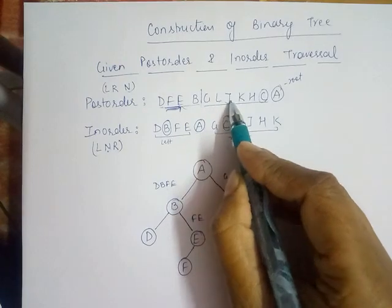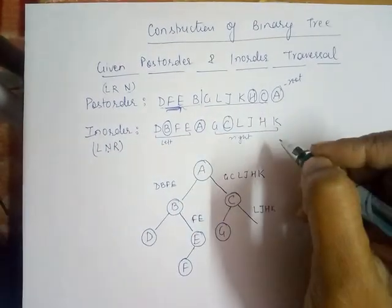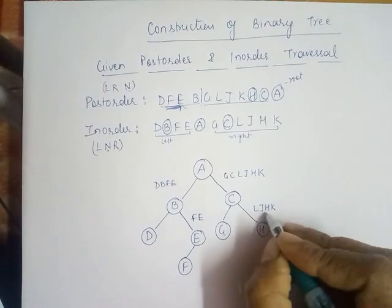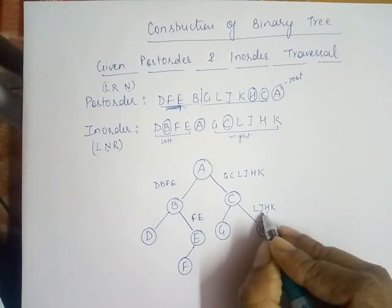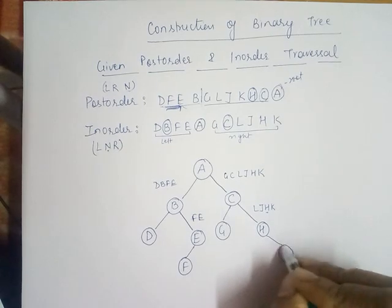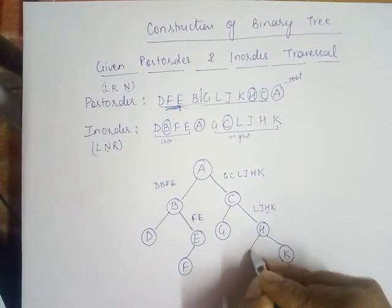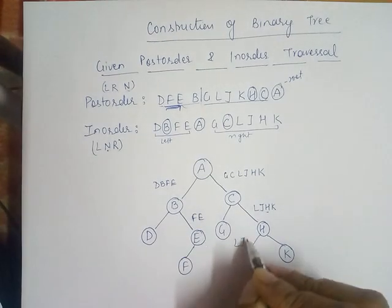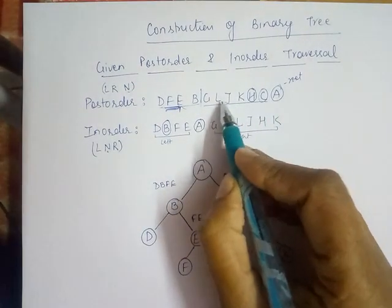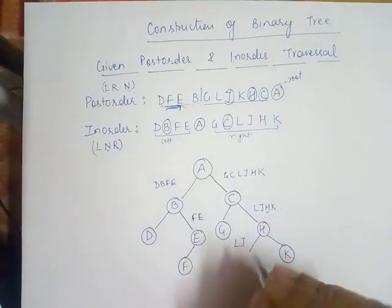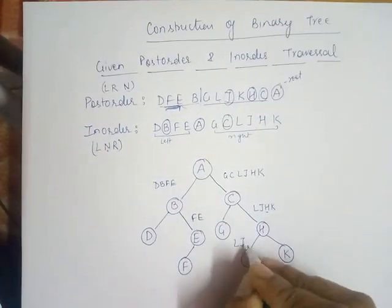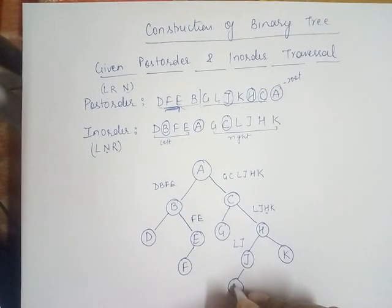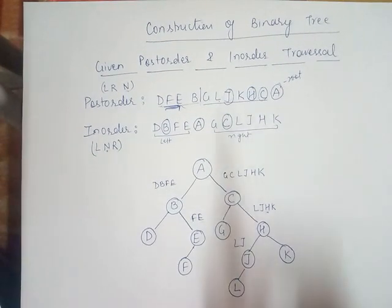For the sequence 'ljhk' in postorder, 'h' comes last, so 'h' becomes the node. 'k' becomes the right child of 'h' and 'lj' comes in the left part of 'h'. For the 'lj' sequence, 'j' comes last, so 'j' becomes the node and 'l' becomes the left child of 'j'.